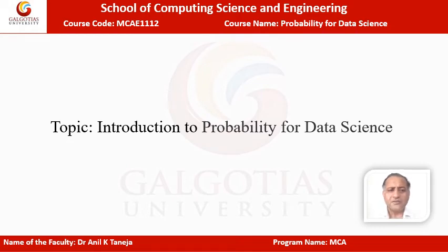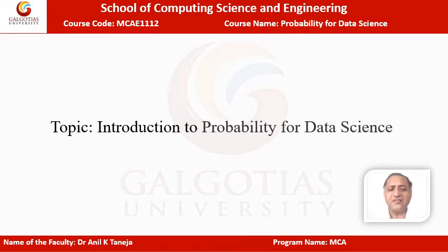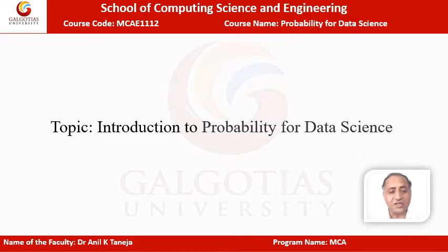Hello Learners, welcome to the course of Probability for Data Science. Data science is an interdisciplinary field that uses scientific methods, processes, algorithms and systems to extract knowledge and insights from structured and unstructured data. And for data science, probability plays an important role. So let us start today's session on the topic of Introduction to Probability for Data Science.